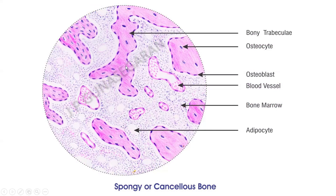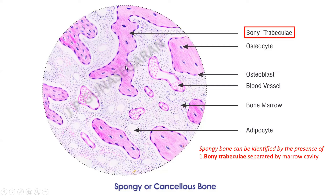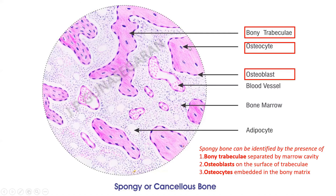This is an HND drawing of spongy or cancellous bone, which can be identified by the presence of bony trabeculae separated by marrow cavity containing bone marrow, osteoblasts on the surface of the bone, and osteocytes embedded in the bony matrix. Spongy bone does not have a Haversian system.